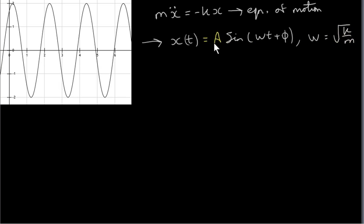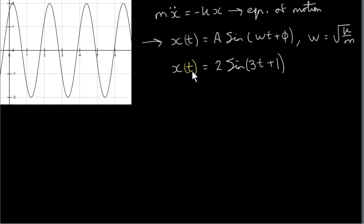We also saw that A is the amplitude of the motion — it's the maximum displacement of the mass from its equilibrium position. In this video, we're going to look at a particular example: 2 sin(3t + 1). We can see from the graph that the amplitude is 2, so the graph goes from minus 2 to plus 2. The maximum displacement is 2 units — 2 meters, whatever.